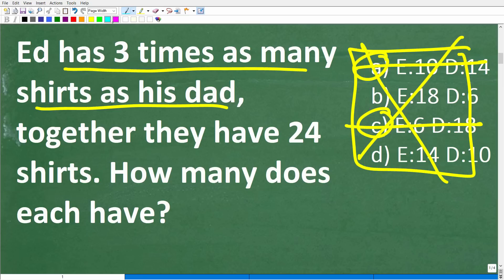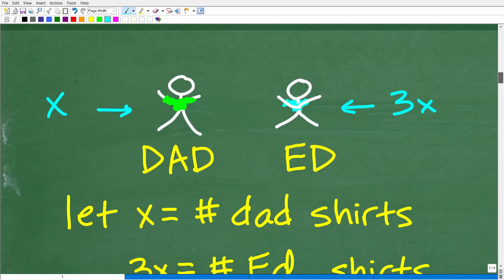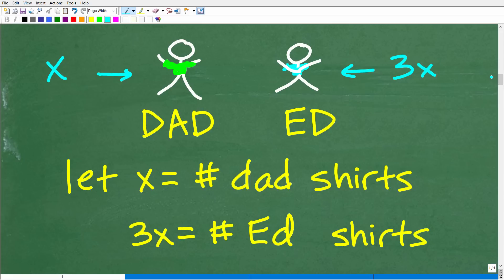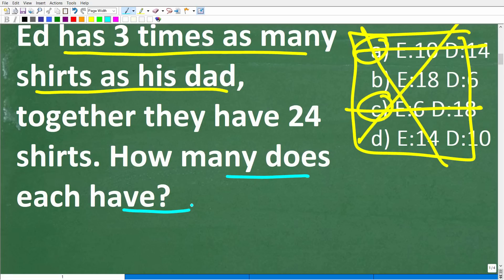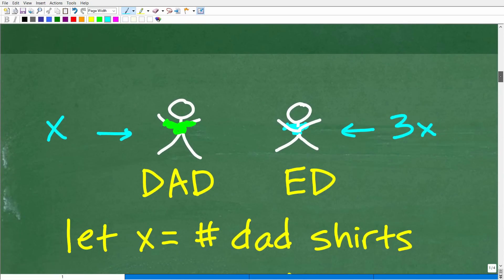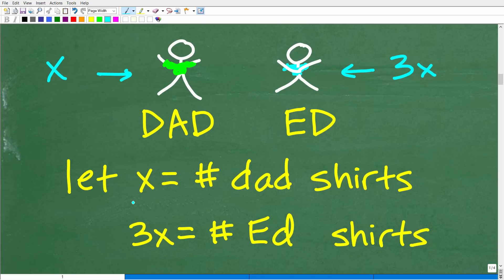All right. So once we understand the problem, what we want to do here is kind of think of a model, some sort of way we can represent the situation. So let's go down here and take a look at this. Now, there's all different sorts of ways you can kind of come up with a model, in terms of trying to visualize the problem. But the problem says Ed has three times as many shirts as his dad. Now, I'm going to use algebra again to solve this problem because we have an unknown value, right? But actually, we're trying to solve for two things. We're trying to solve for how many shirts each has. But we can use one variable here to kind of express how many shirts each has. Because if I say, well, let me let X represent the number of shirts the father has, the dad has, 3X, three times that, three times as many shirts, is how many shirts Ed has.